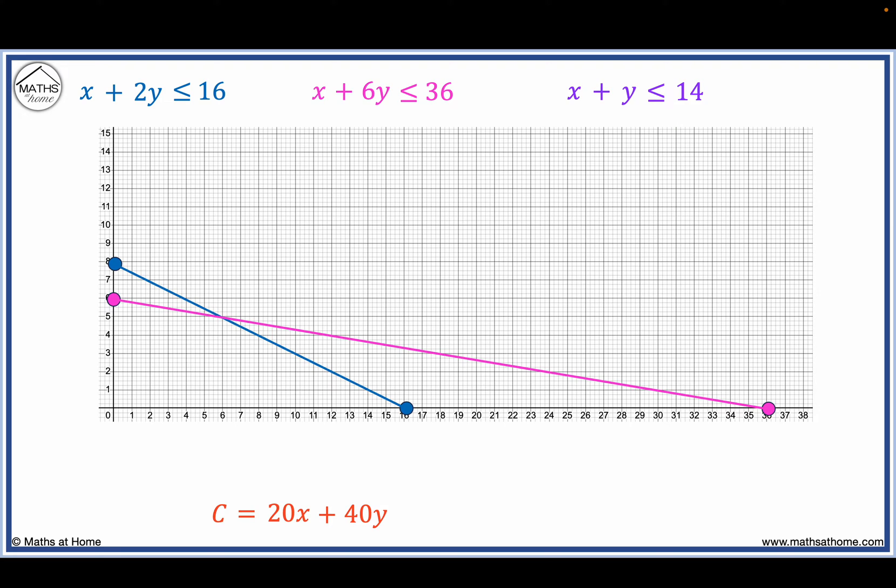Finally, 14 divided by 1 equals 14, and 14 divided by 1 equals 14. Since all three equations have a less than or equal to sign, we shade below all three lines.